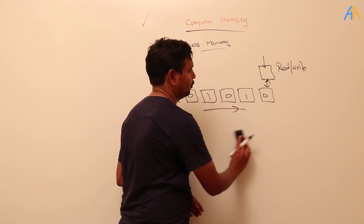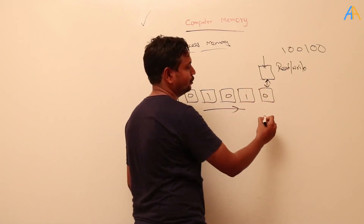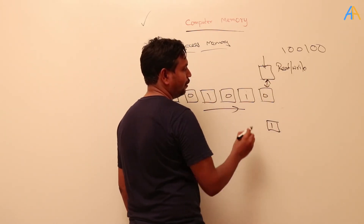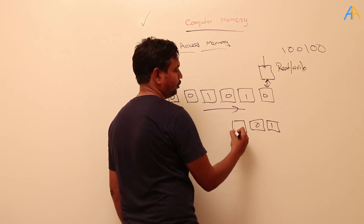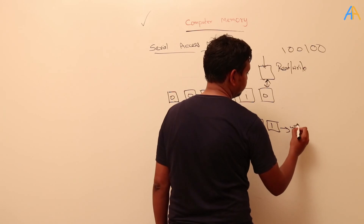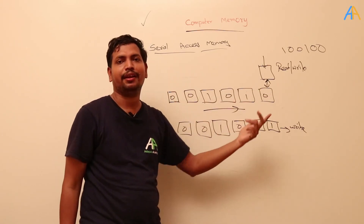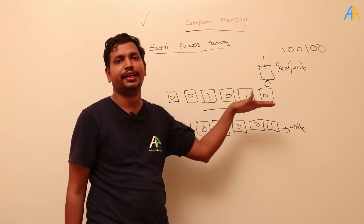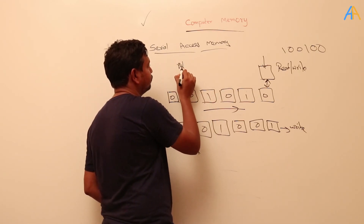Similarly, if you want to write — for example, you want to write one, zero, zero, one — first it will write this one here; the tape is moving in this direction. First one will come and it will write here, then the next one will come and it will write zero here, and then zero again. So it writes serially: zero, zero, one, zero, zero, like this. Here we are writing serially and reading serially. We cannot access a particular location because we cannot specify an address and retrieve data for that location — we have to access all the data serially. So it is a non-addressable memory; serial access memory is non-addressable memory.